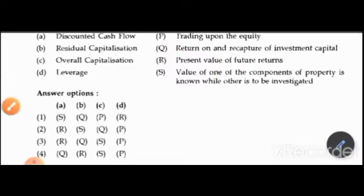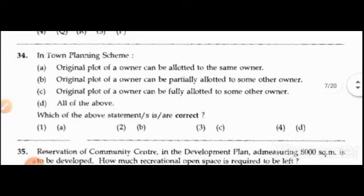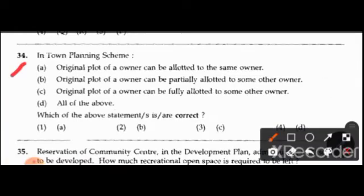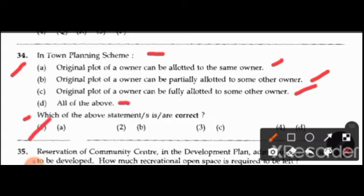Question 34: In a town planning scheme, which statement is correct? Option A: the original plot of the owner can be allotted to the same owner. Option B: the original plot of the owner can be partially allotted to some other owner. Option C: the original plot of the owner can be fully allotted to some other owner. Option D: all of the above. The right answer is option D — all of the above statements are correct.